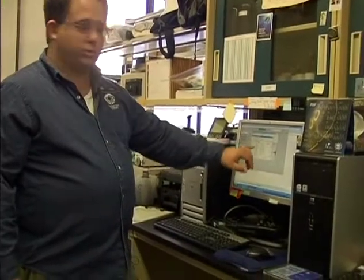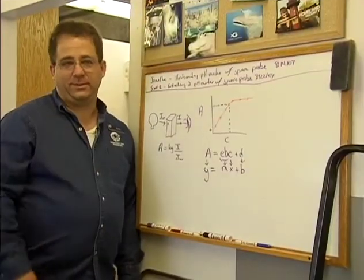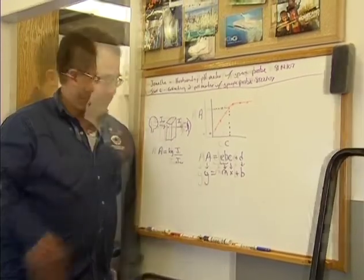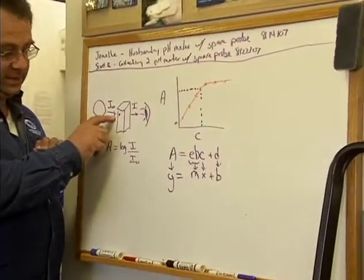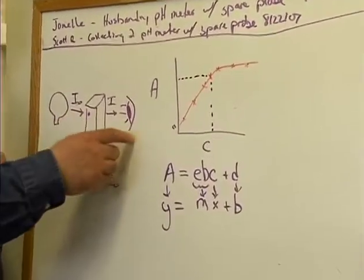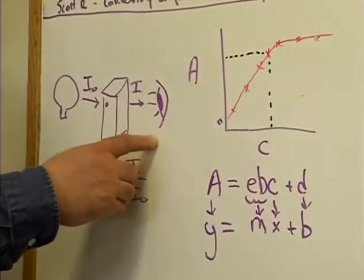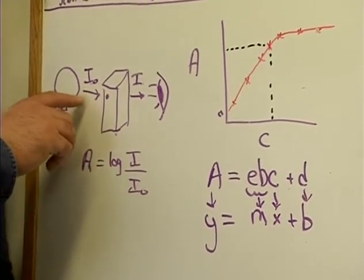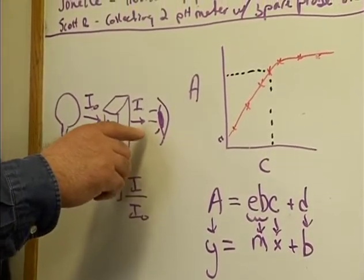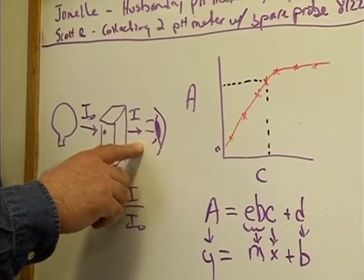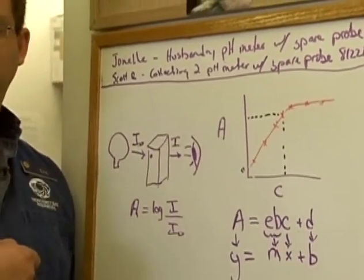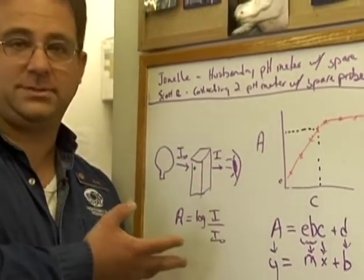This is all controlled by this computer and this little auto program over here. What we were just doing at the computer was actually doing all the math for us. To give you an idea of what's going on behind the scenes: if we have a light source, it's going to shine light through our flow cell, and there's a machine that will measure the amount of light accurately. By looking at the amount of light coming into the flow cell compared to the amount going out, the logarithmic ratio of that is called absorbance. Pretty much everything we do that uses the spectrophotometer is using this type of math.